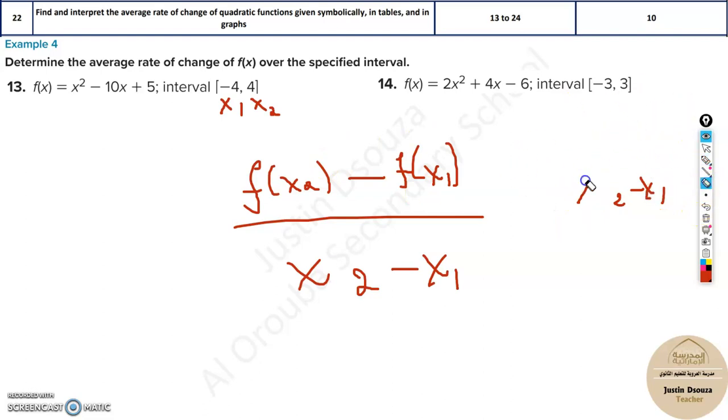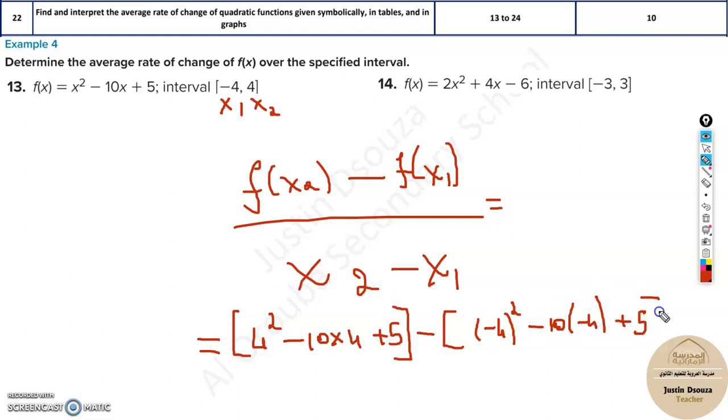What this means is the second interval value must be put instead of x. Instead of x, you need to put 4: 4 squared minus 10 times 4 plus 5. This is f(x2). Then f(x1): minus, open the bracket, minus 4 squared minus 10 times minus 4 plus 5. This is f(x1), divided by x2 minus x1: 4 minus minus 4. Put this in the calculator and you will get the answer.